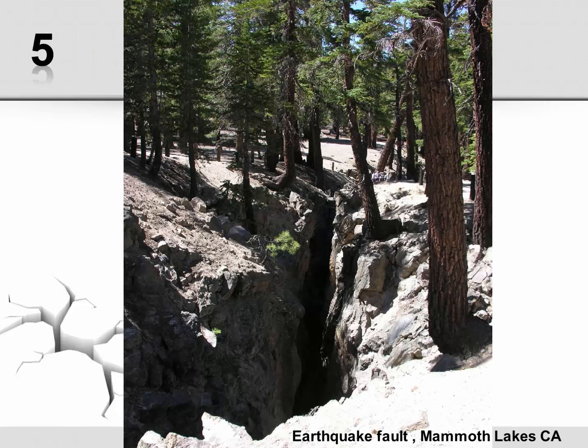Finally, number five is the Earthquake Fault near Mammoth Lakes, California. This is a great example of a rift where the earth was experiencing tension and cracked open, causing this split in the rocks.